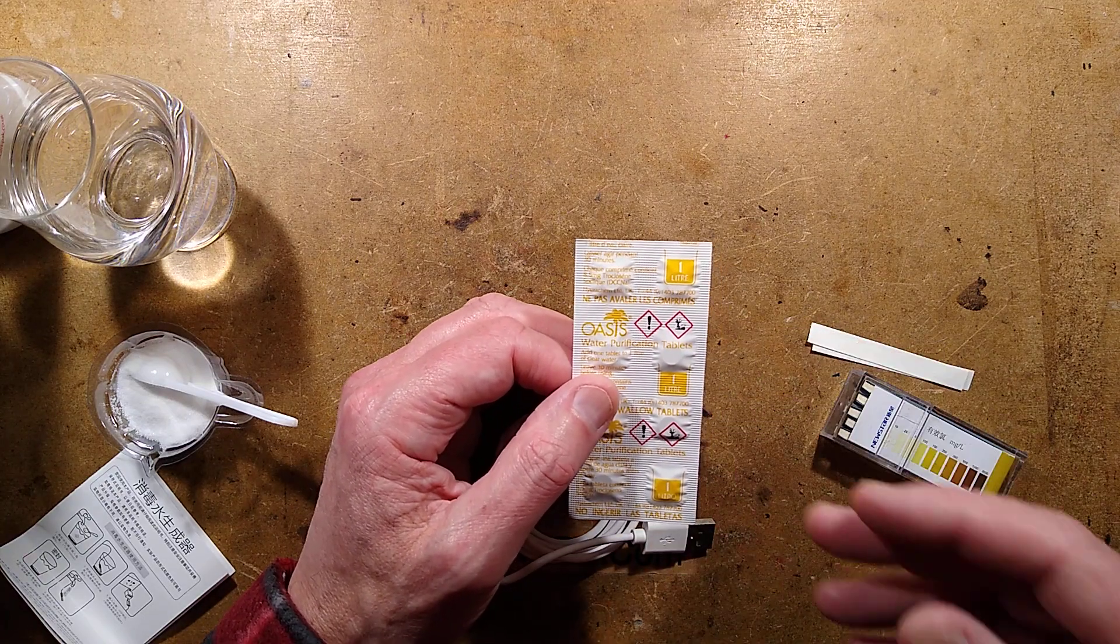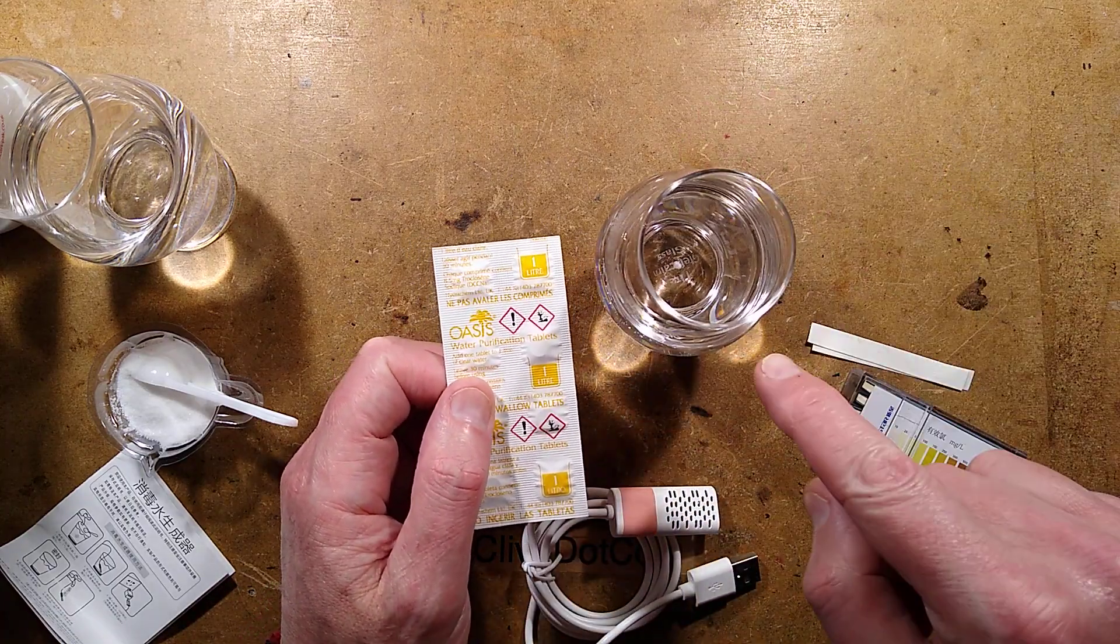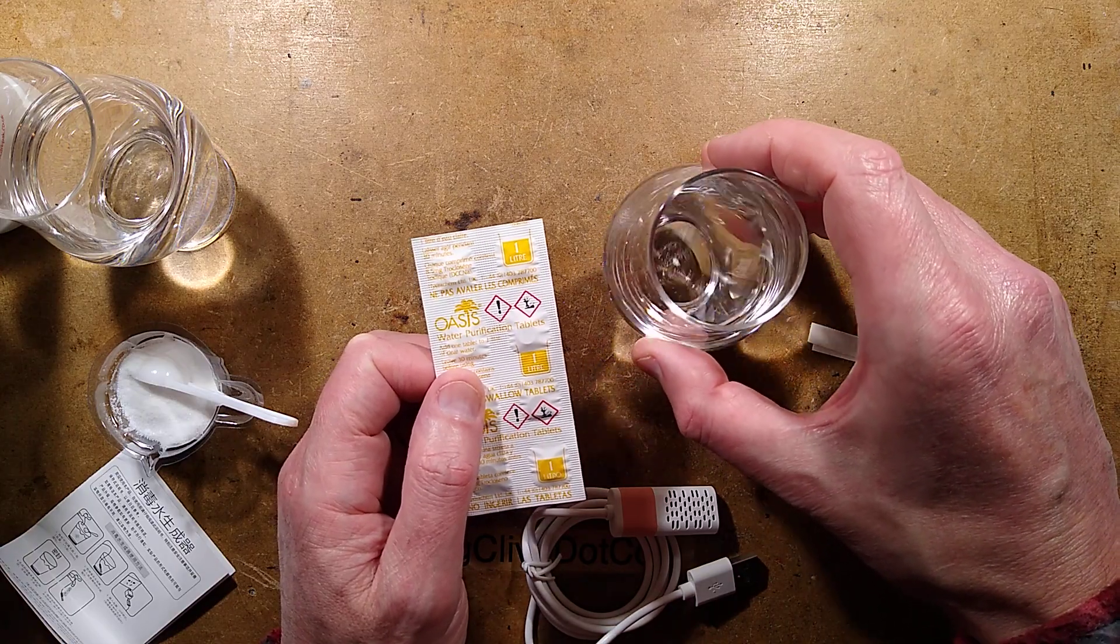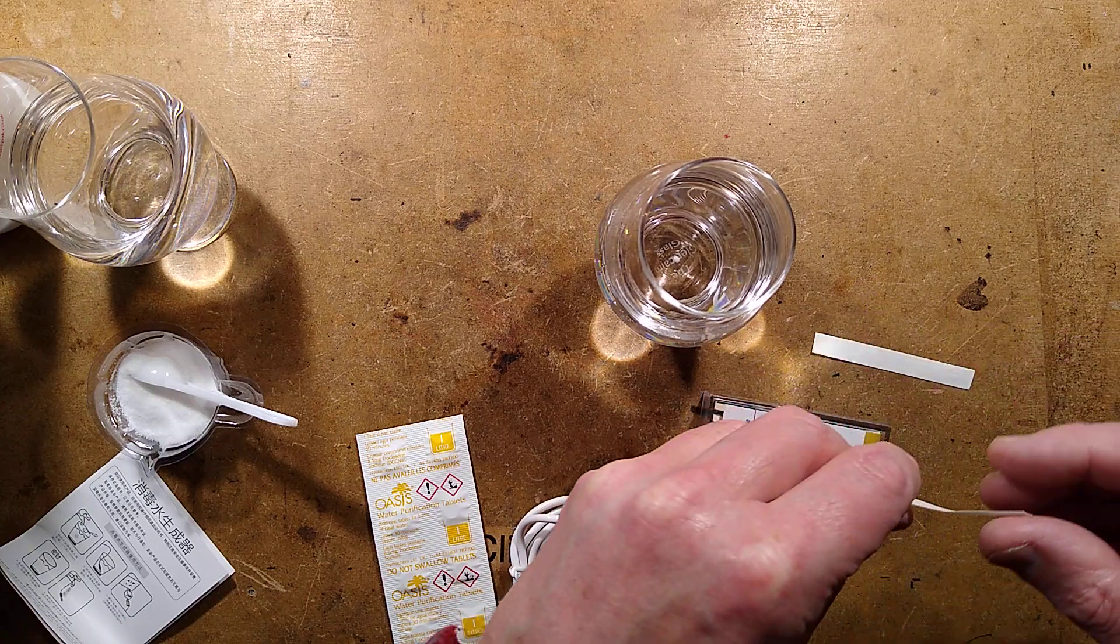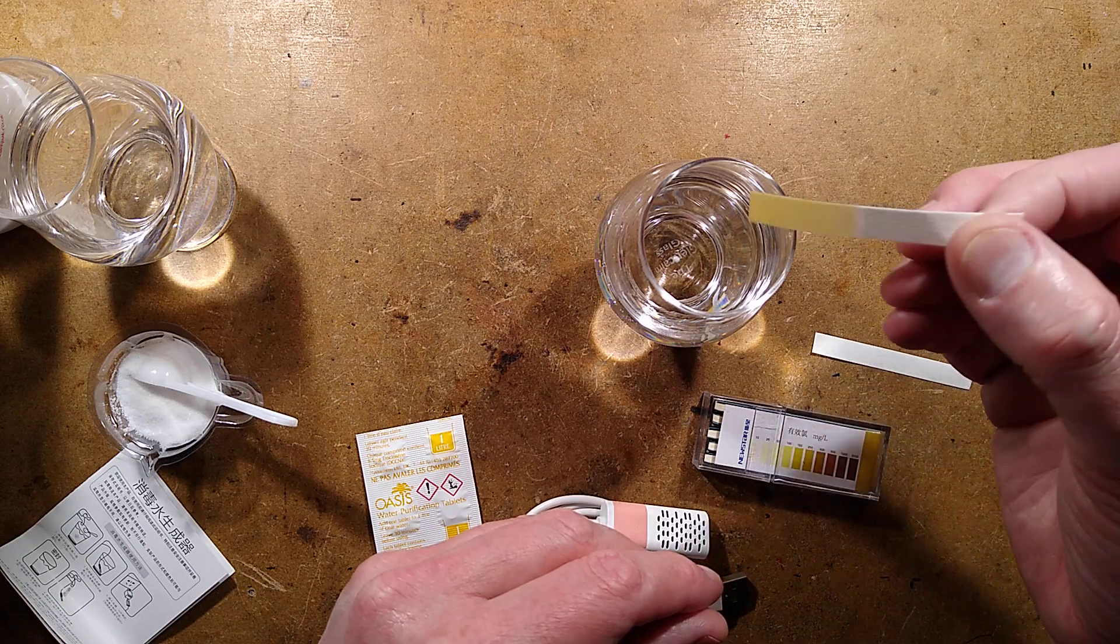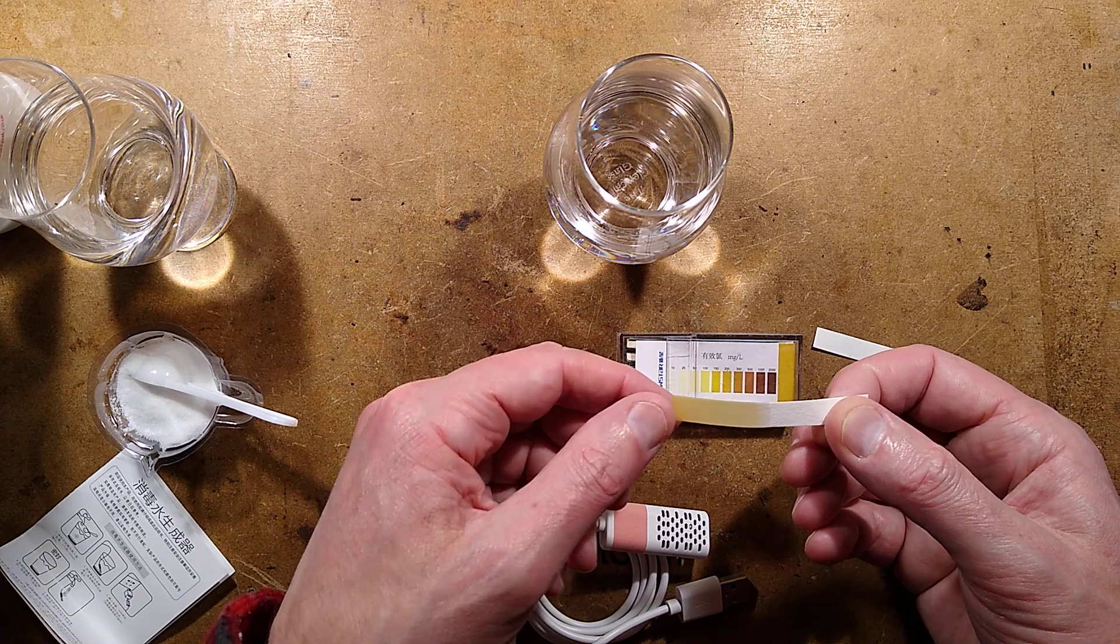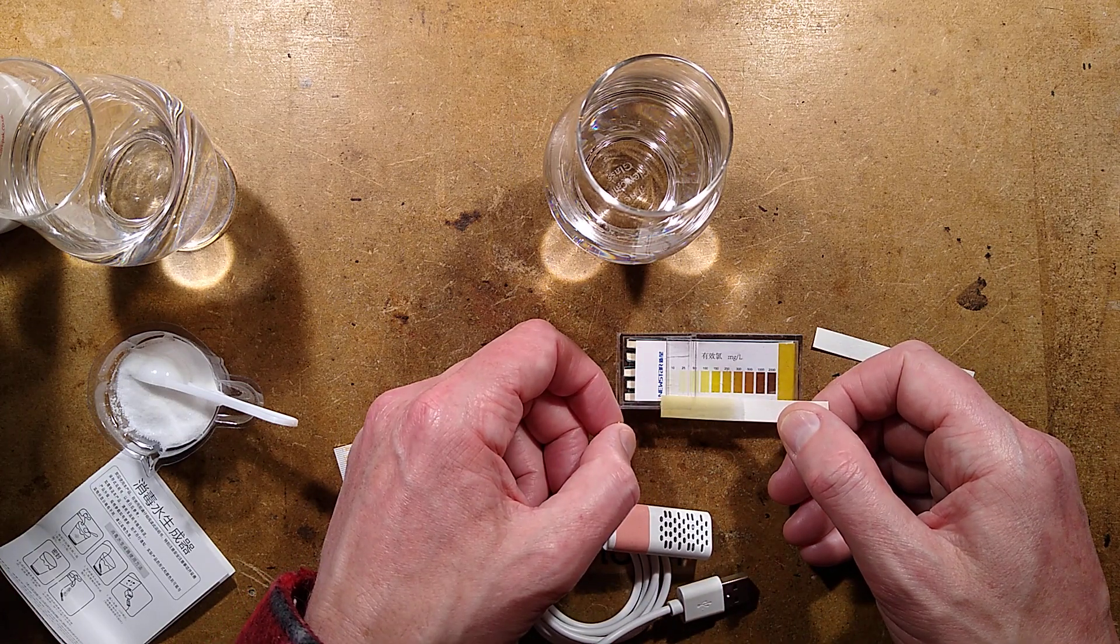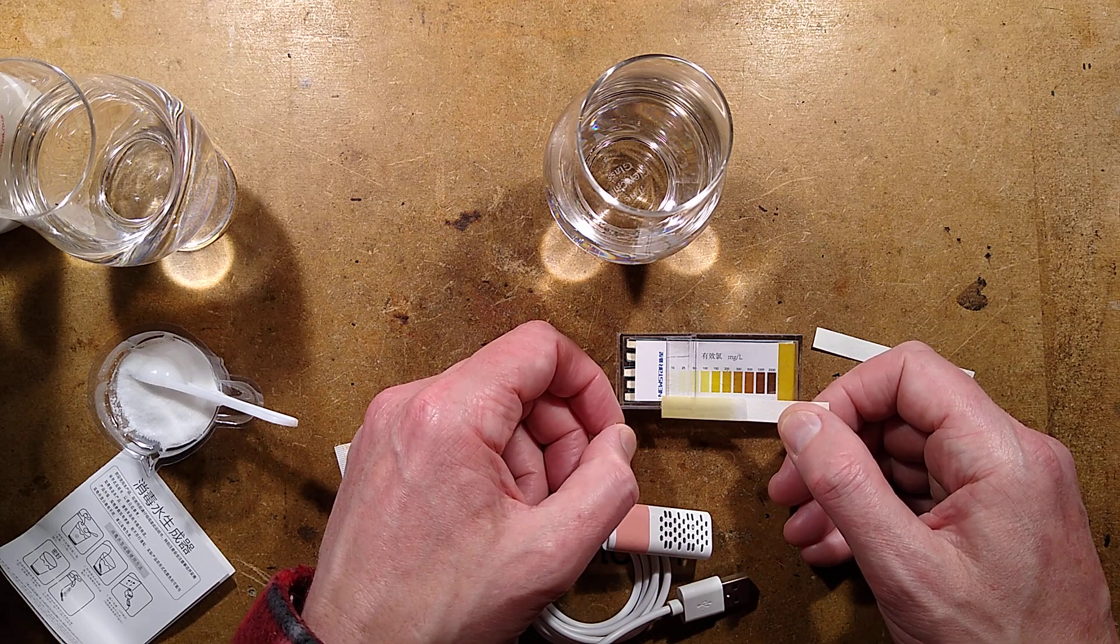When you dissolve one of these 8.5 milligram tablets in one litre of water, it gives about five parts per million of chlorine. I exaggerated that, I dissolved one in just 100 milliliters which is a tenth of a litre. I dipped a strip in it because I've got these chlorine test strips here. The level is extremely low. When you dip the strip in there's a very slight colour change. Keep in mind this is 10 times the strength that it would normally be. When compared to the chart it comes in about 2.5 to 5 milligrams per litre, so it would be a tenth of that.